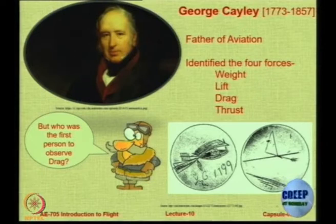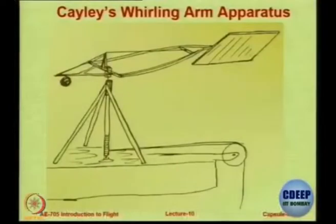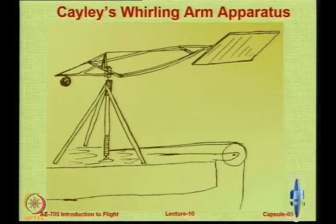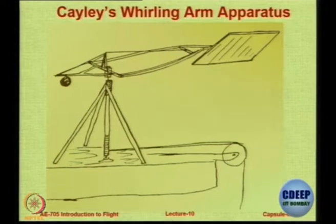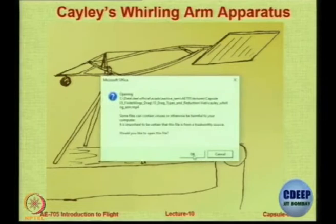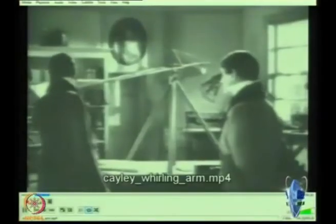This is the first historical recorded sketch of the four forces acting on any flying body, and he was a scientist who also did a lot of experiments. Many years before the Wright Brothers, Sir George Cayley designed and fabricated a whirling arm apparatus, which was used to calculate or look at the forces acting on the body. Here is a small video clip of this apparatus.